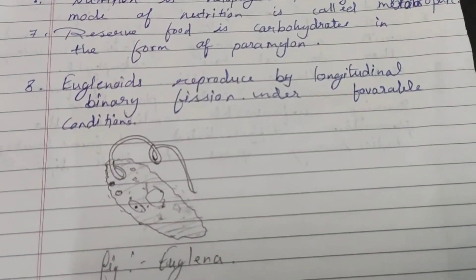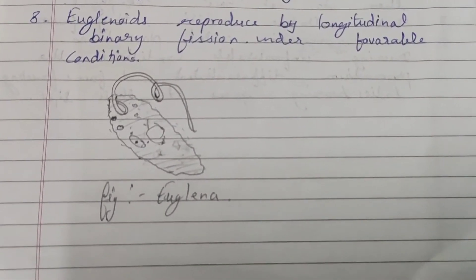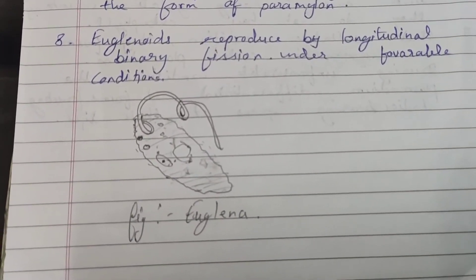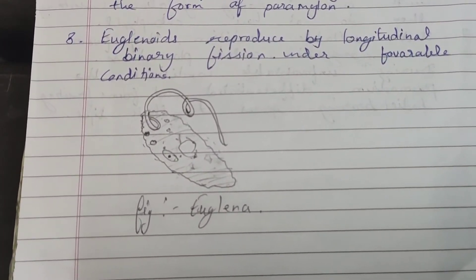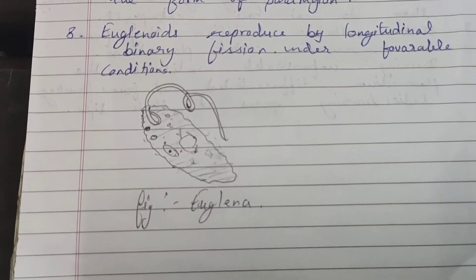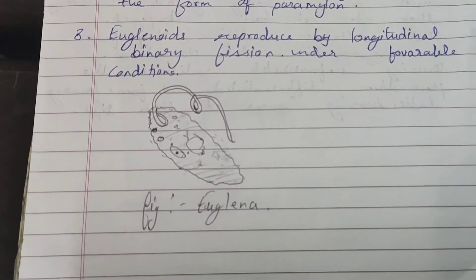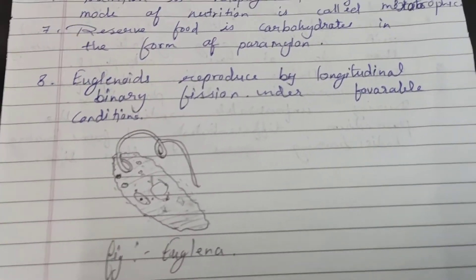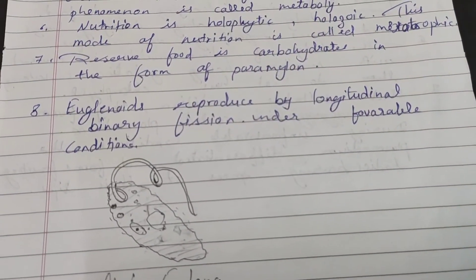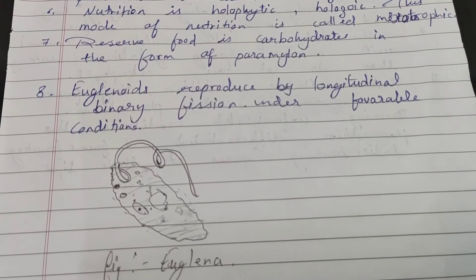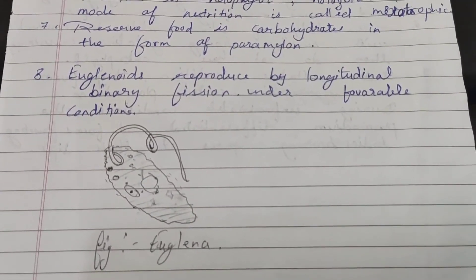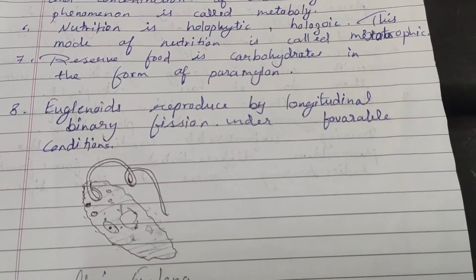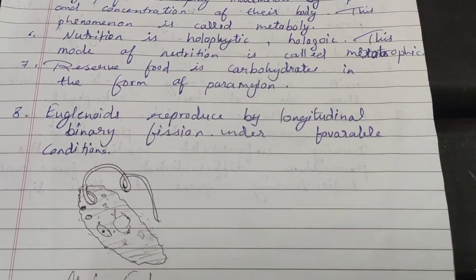Euglenoids show both plant and animal features. So we can consider them as both a plant and an animal — on this basis we call them plant-animals. I hope you understood about the photosynthetic protisteans.